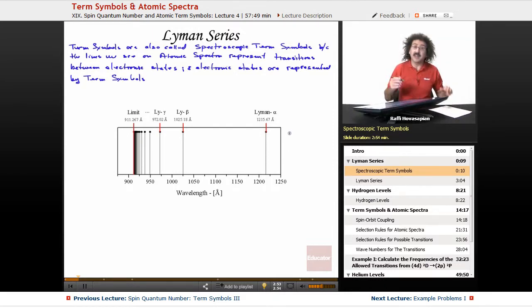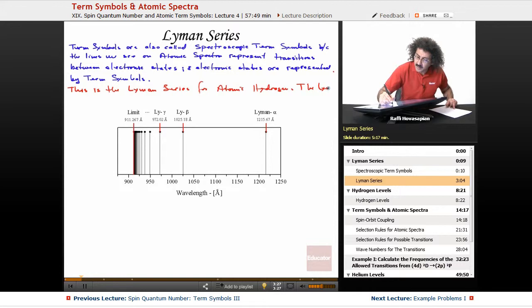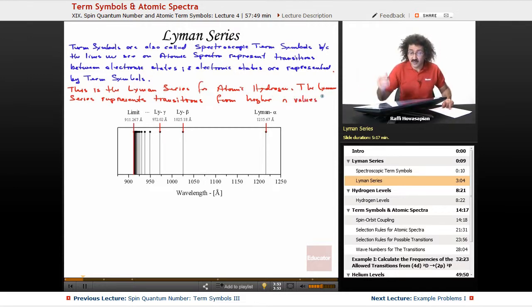So this particular one is the Lyman series for atomic hydrogen. This right here is the Lyman series for atomic hydrogen. The Lyman series represents transitions from higher n values, the first quantum number, n equals 1, 2, 3, 4, 5. So higher n values.